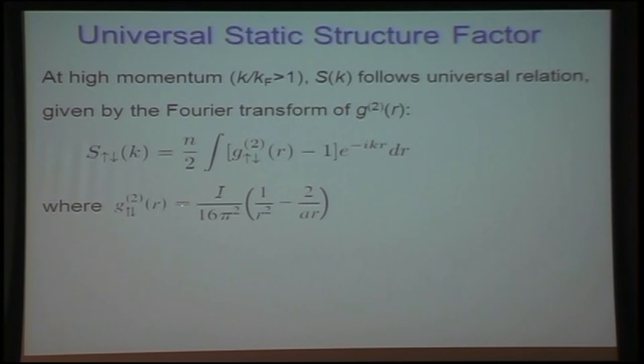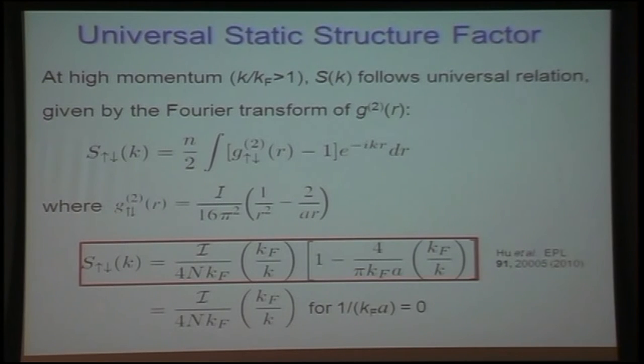At high momentum, the static structure factor follows a simple relation given by the Fourier transform of G2. This is related to the contact, this is what TAN showed, and then if you take a Fourier transform of that, you get, for the static structure factor, this relationship in terms of the contact and inversely proportional to the momentum. This is close to unitarity, this term goes to zero, and you're left with this very simple linear dependence. The static structure depending linearly on the contact and inversely proportional to the momentum.